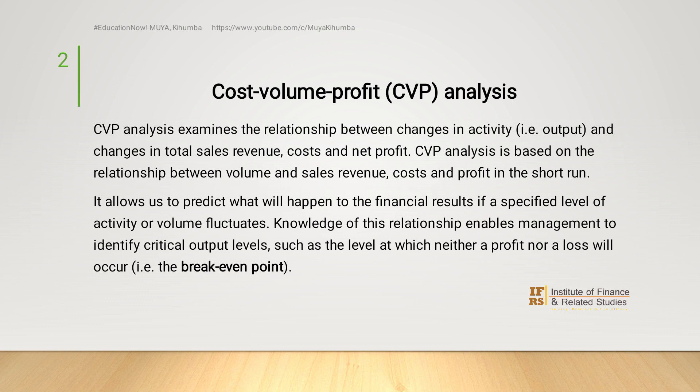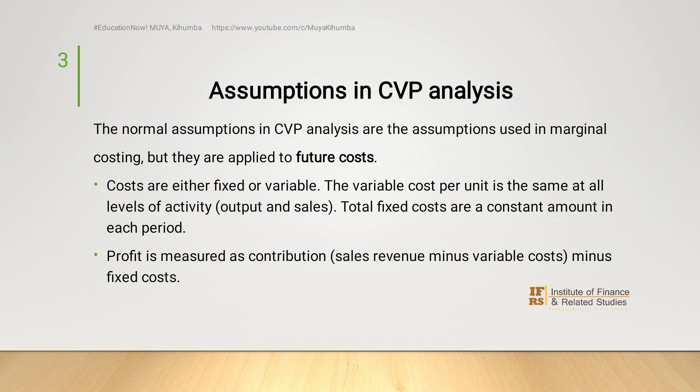Knowledge of this relationship enables management to identify critical output levels, such as the point at which we neither have a profit nor a loss — and this occurs at the break-even point. CVP analysis is based on certain assumptions and uses a marginal costing approach, but applies it to future costs. One assumption is that costs are either fixed or variable, and the variable cost per unit is the same at all levels of activity.